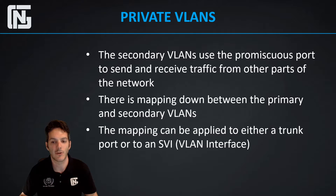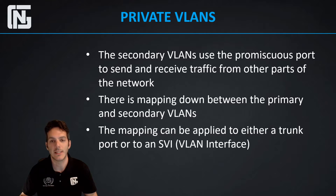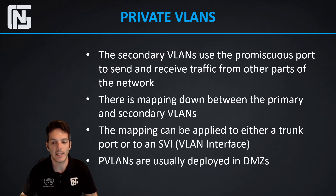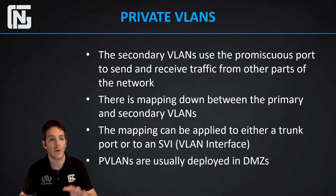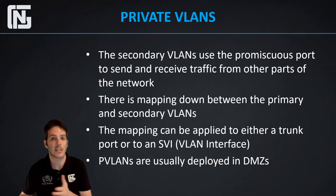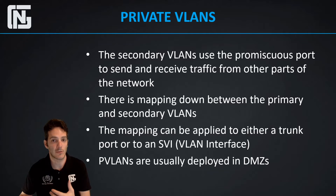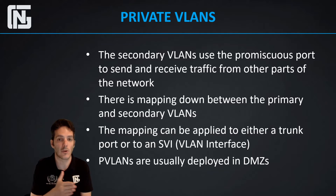The mapping can be applied to a trunk link or to an SVI. Using SVIs is preferable because at the SVI level you can limit the actual transport being used — instead of just allowing IP communication, you can break it down to TCP, UDP, ICMP, and so forth. Private VLANs are usually deployed in demilitarized zones, or DMZs, where you allow external sources to reach internal resources. These are publicly facing devices inside your network that you want to grant access to, but with a level of hierarchy to prevent lateral movement where you don't want it.